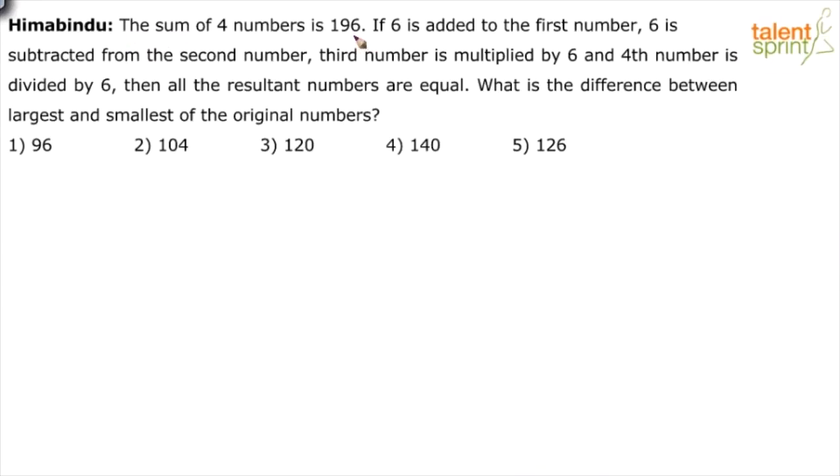The sum of four numbers is 196. If 6 is added to the first number, 6 is subtracted from the second number, third number is multiplied by 6 and fourth number is divided by 6, then all the resultant numbers are equal. What is the difference between the largest and the smallest of the original numbers?